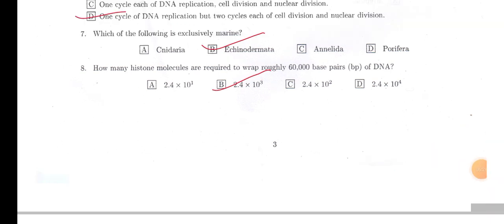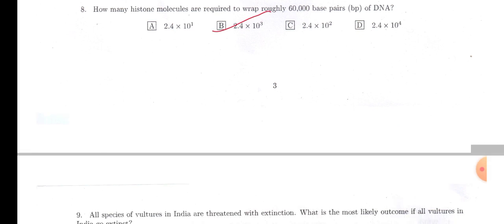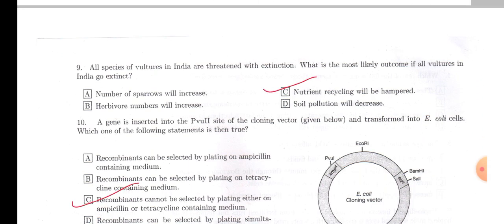So you have to divide 60,000 by 200, so 300 will be the answer. And then you have to multiply it by 8, as one histone octamer consists of eight histone proteins. So 300 into 8, that is 2400, that means 2.4 × 10³. So option B will be the answer.